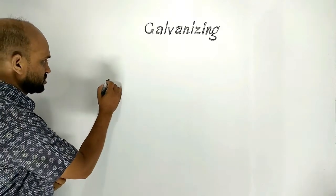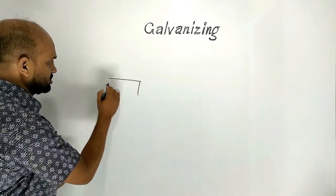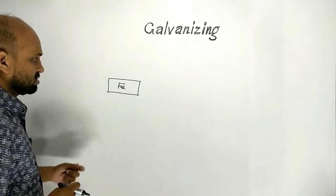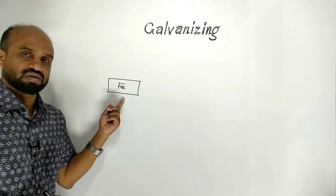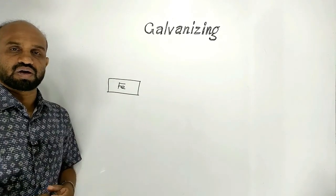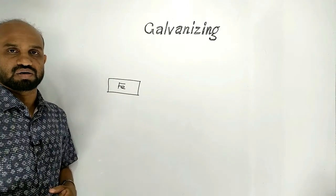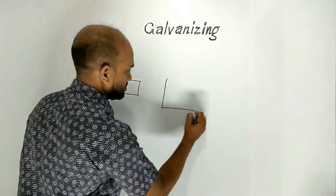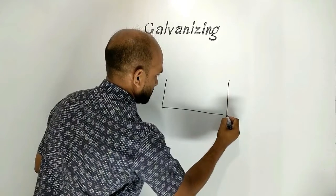Suppose this is an article made of iron or steel. Steel is a kind of alloy of iron and carbon, and this is a vessel.